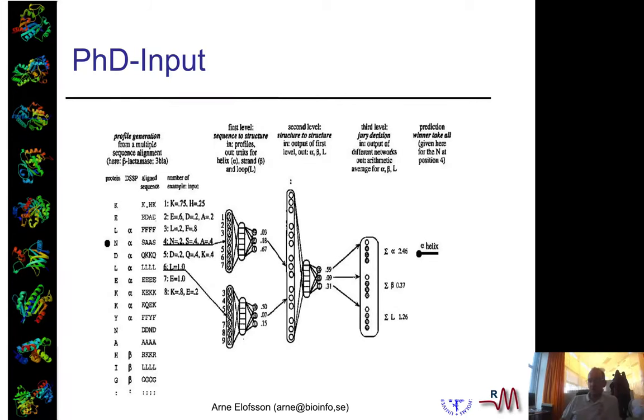However, to reach this accuracy, you actually had in this case a second level network. Basically, you take the predictions from the first layer network and use that to output the prediction in the overall picture.